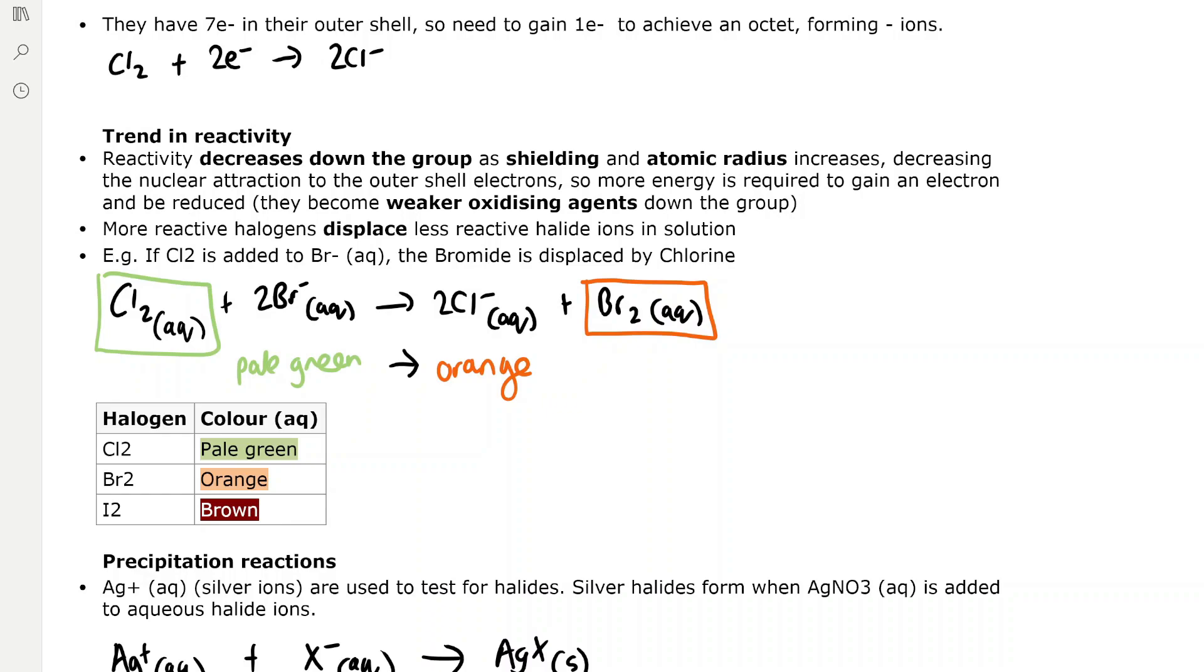Chlorine in aqueous solution is pale green, bromine is orange as we know from the bromine test for alkenes, and iodine is brown. In cyclohexane, it's important to remember that iodine appears violet, which helps differentiate better between bromine and iodine, because chlorine and bromine appear the same in cyclohexane as they do in water.